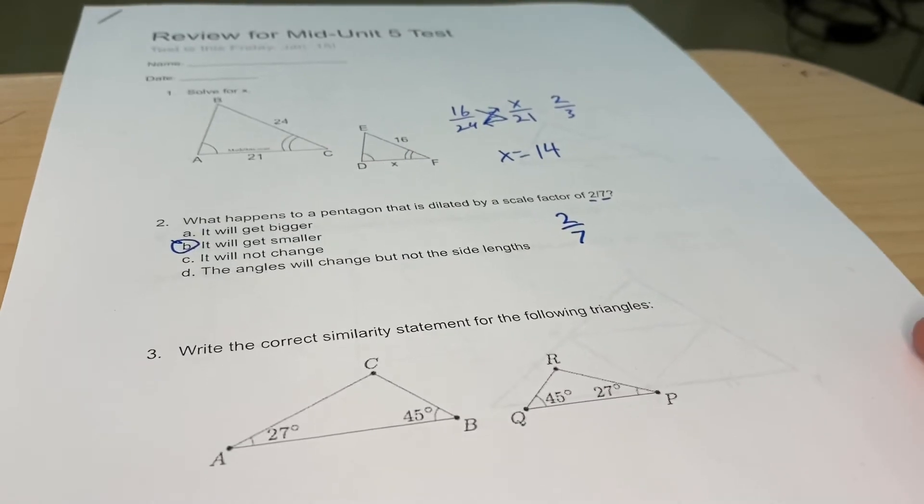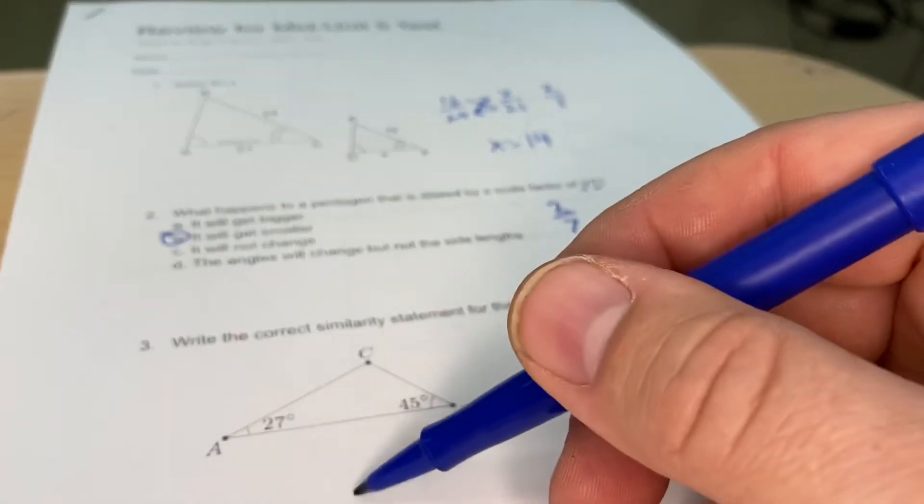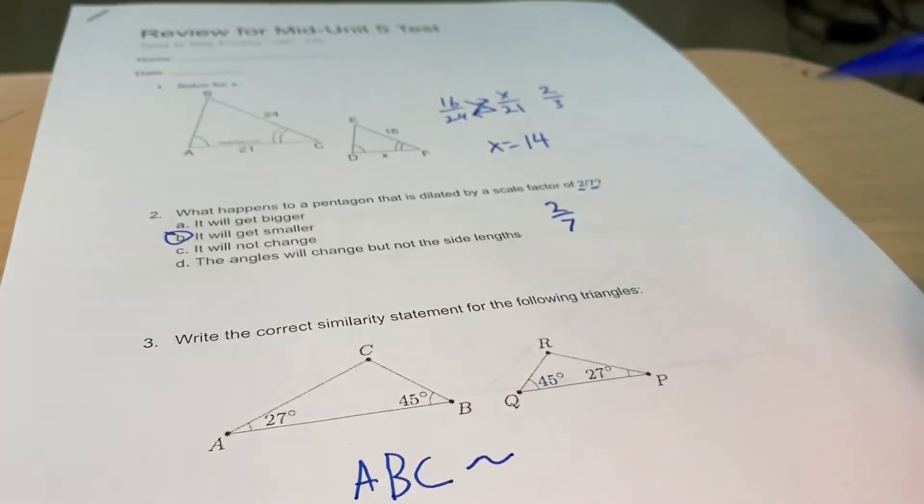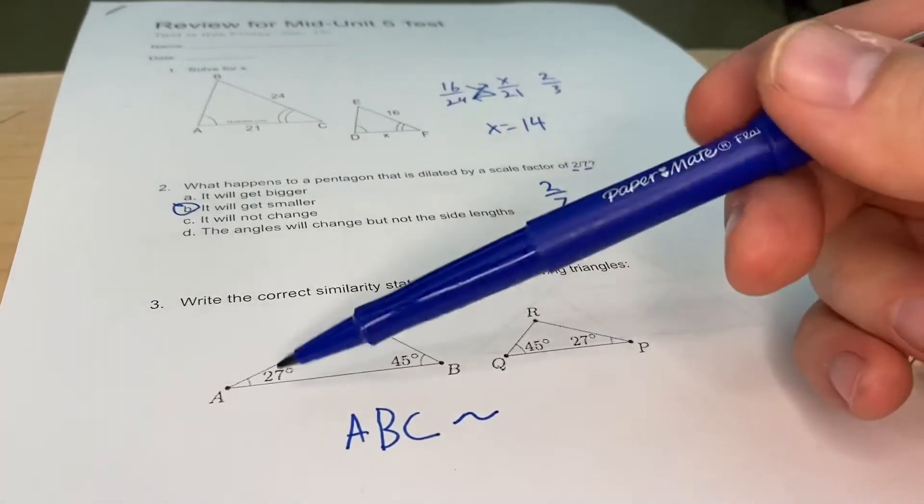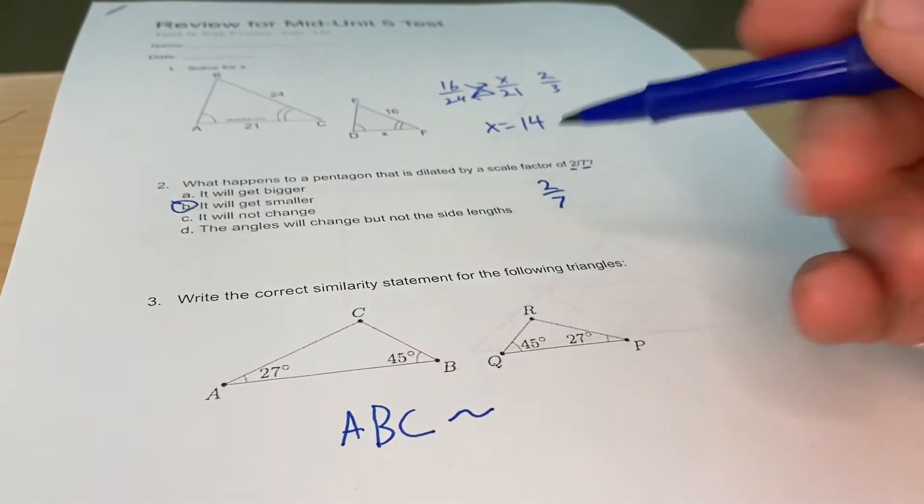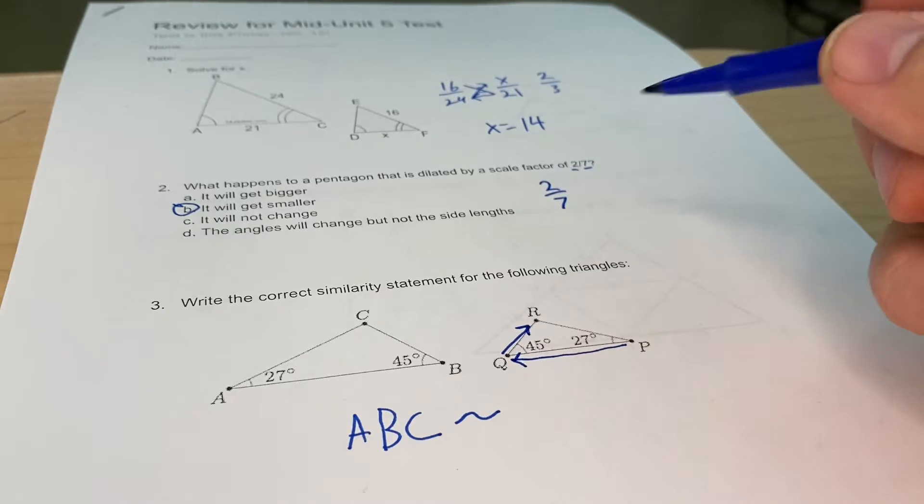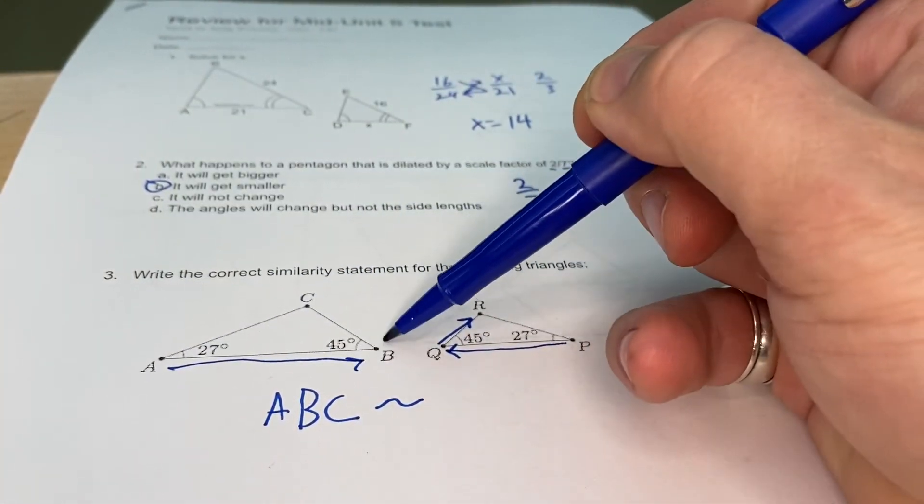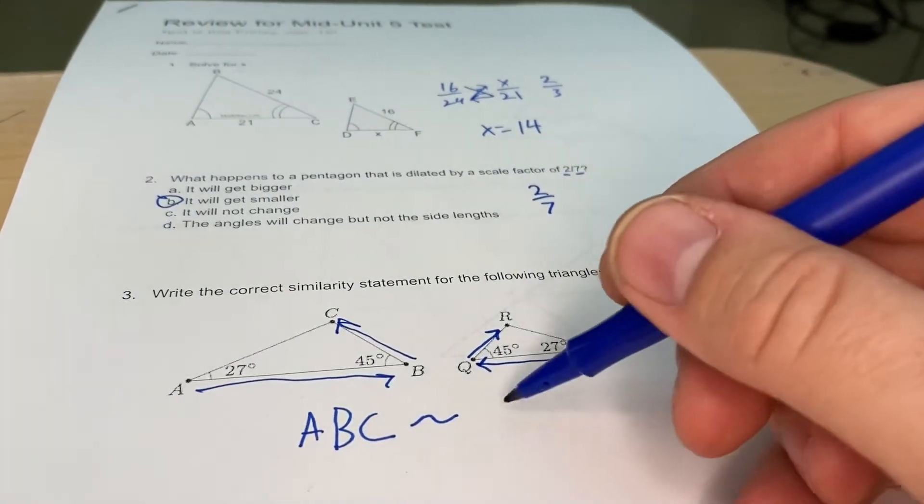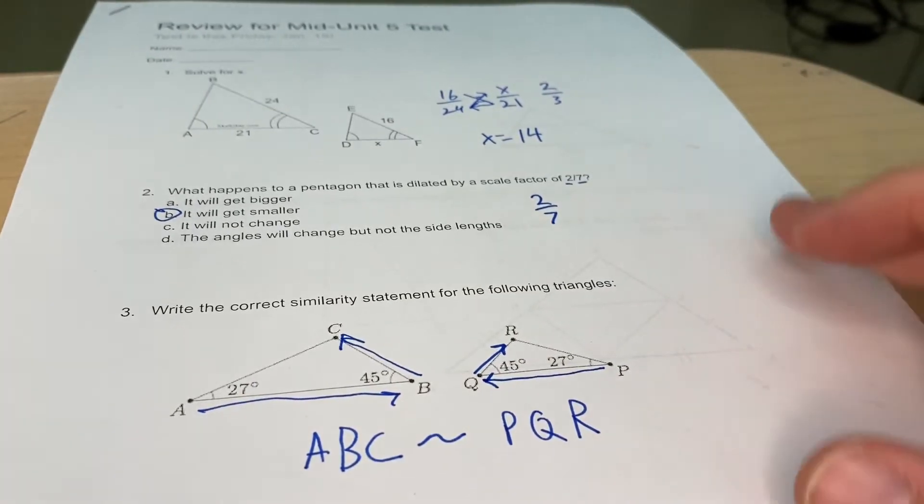Number three, write the correct similarity statement for the following triangles. I'm going to keep this one in alphabetical order, so I'm going to call it A, B, C. And then I'm going to put my little sign for similar, my little tilde. Now it goes from 27 to 45 and then to my third angle. So I'm going to need to go from 27 over here to the 45 degree angle up here to the unnamed one, so that I'm going in the same direction for both of these. So that's going to be ABC is similar to PQR. And wouldn't you know it, it stays in alphabetical order on the second one.